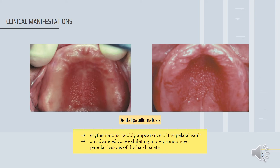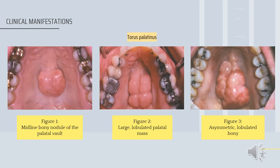Denture papillomatosis is characterized by an erythematous, pebbled appearance of the palatal mucosa. In advanced cases, it has more pronounced papillary lesions of the hard palate. For torus palatinus, three figures are shown: Figure 1 shows a midline bony nodule of the palatal mucosa; Figure 2 shows a large lobulated palatal mass; and Figure 3 shows an asymmetric lobulated bony prominence.